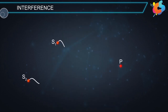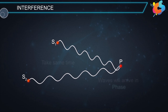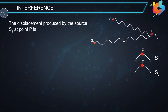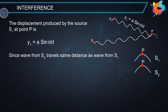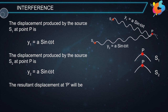Since the distances are equal, the waves coming from S1 and S2 will take the same time to reach point P. Therefore, the waves will arrive in phase. The word 'in phase' means that the displacement of one wave at a point is equal to the displacement of another wave at the same point. If the displacement produced by S1 at point P is y1 = a sin(ωt), since the wave from S2 travels the same distance, the displacement is also y2 = a sin(ωt). The resultant displacement at P is y = y1 + y2 = 2a sin(ωt).